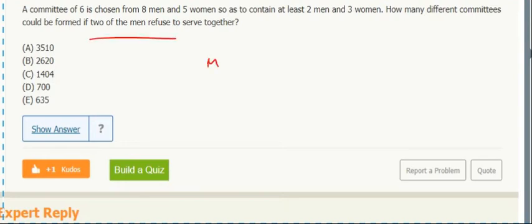We need two men who refuse to serve together. Whenever they do that, the constraint is two of them refuse to work together, you basically do total minus where they work together. Now in the total, I don't want to just do 13 choose 6. I want to leave in this restriction about there being at least two men and at least three women. Because I'm not messing with that restriction. I'm messing with the problem about the two guys working together.